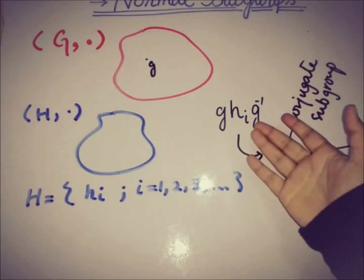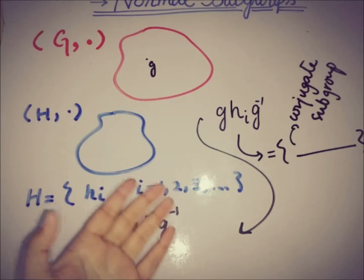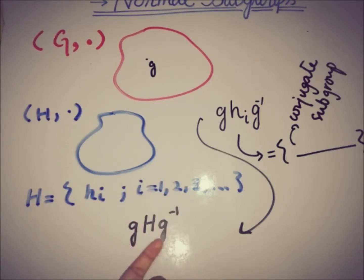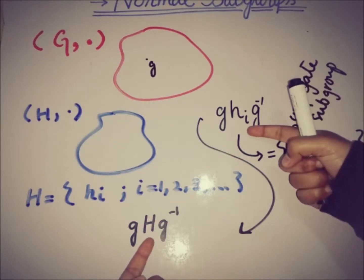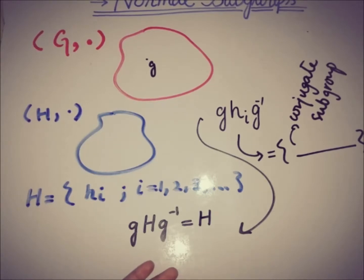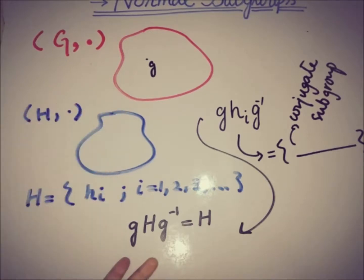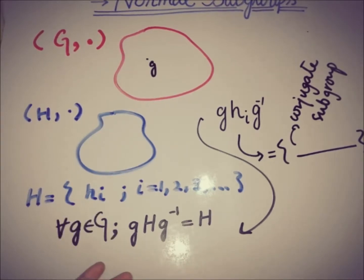We write g·H_i·g-inverse as gHg-inverse, because we take all elements of the subgroup. Instead of writing H_i where i belongs to the natural numbers, we represent it as gHg-inverse. We fix one element of G, replace all elements of H, then take another element of G and repeat the process for all elements of G. Then H is a normal subgroup of G.